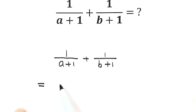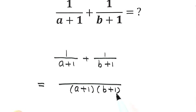So then here on the bottom just a plus 1 times b plus 1. Then on top, here just b plus 1, then plus a plus 1 here. So then just a plus 1.